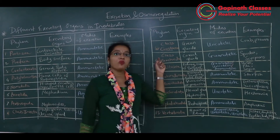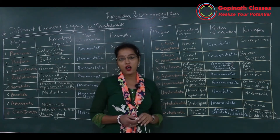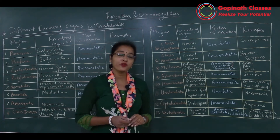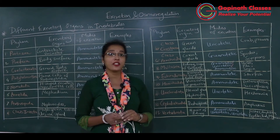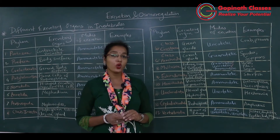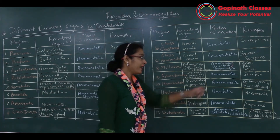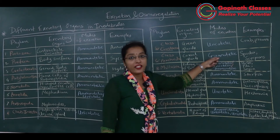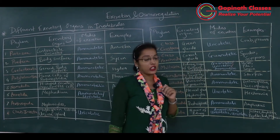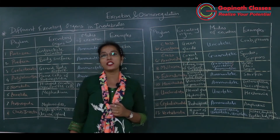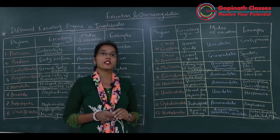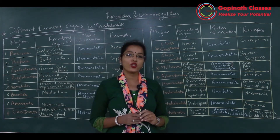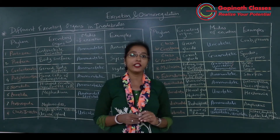The third class of phylum Arthropoda is Arachnida — the class of spiders and scorpions. The mode of excretion seen in arachnids is guanotelism; they excrete nitrogenous waste in the form of guanine. The excretory organs are coxal glands, which produce guanine. So in spiders and scorpions, nitrogenous waste is produced as guanine in the coxal glands and excreted out of the body.